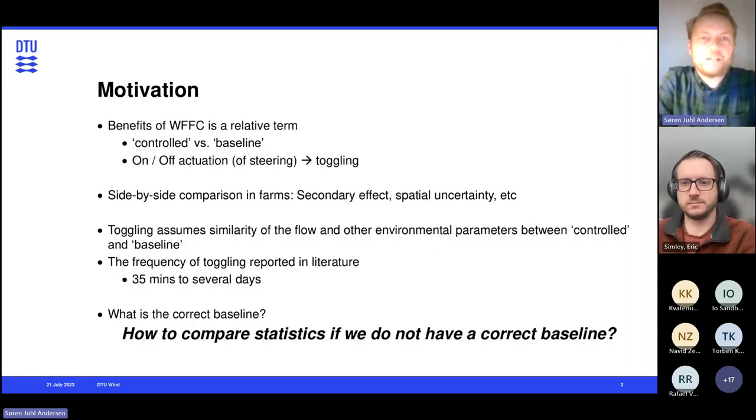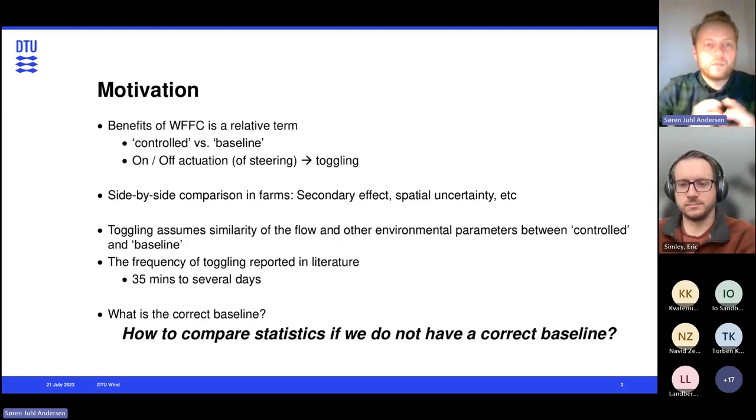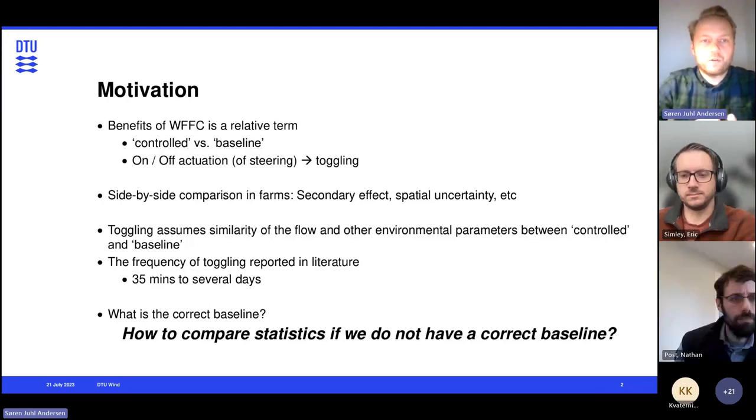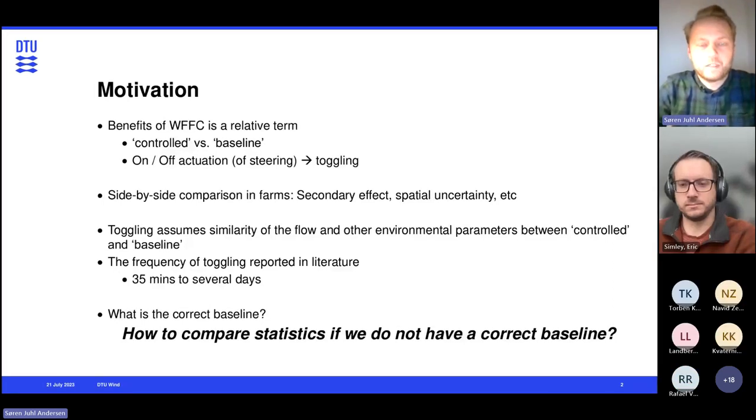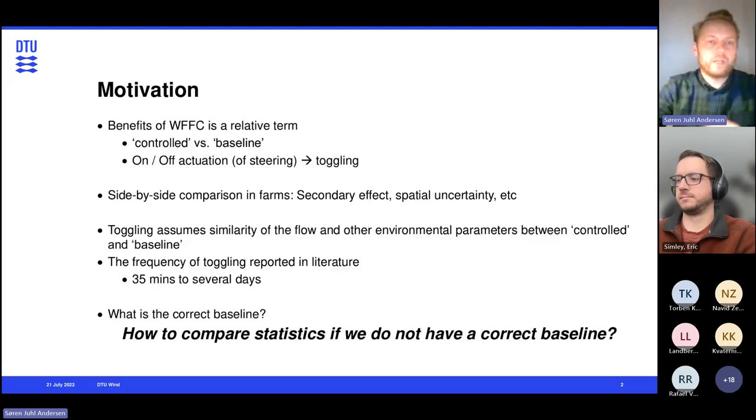So the underlying motivation, which I guess most of you here know, is that basically if we talk about the benefits of wind farm flow control, it becomes a relative term. It's very often where we're talking about this control scenario compared to a baseline scenario, and there's different ways we can do this. One of them is sort of an on-off actuation where we steer or yaw the turbines to steer the wake, and then we turn off yaw to have a baseline, and that's what we call toggling this on-and-off actuation.